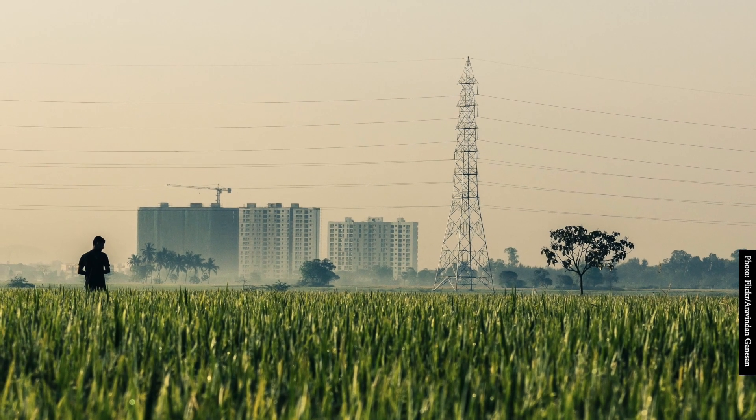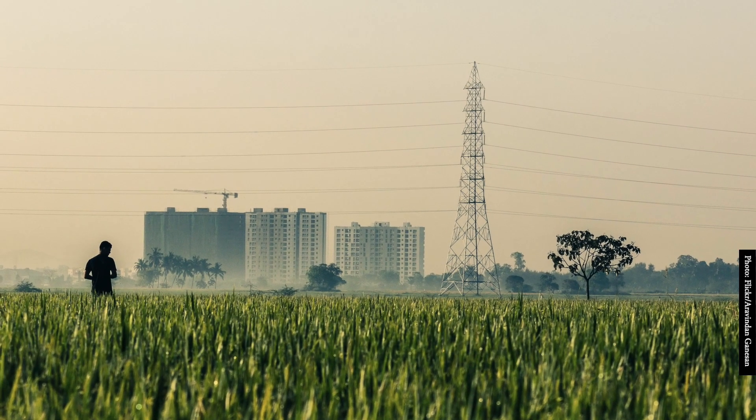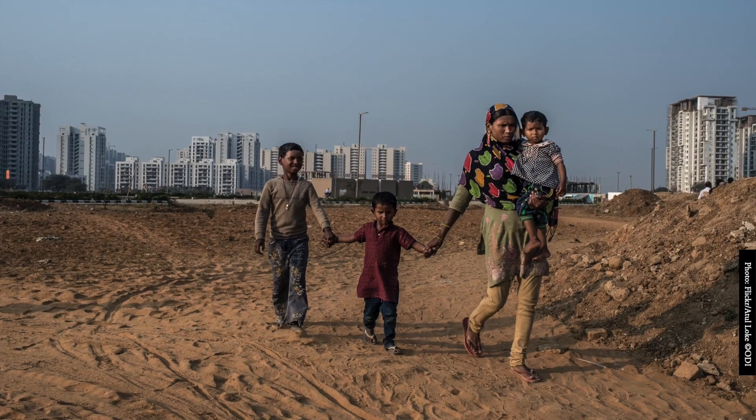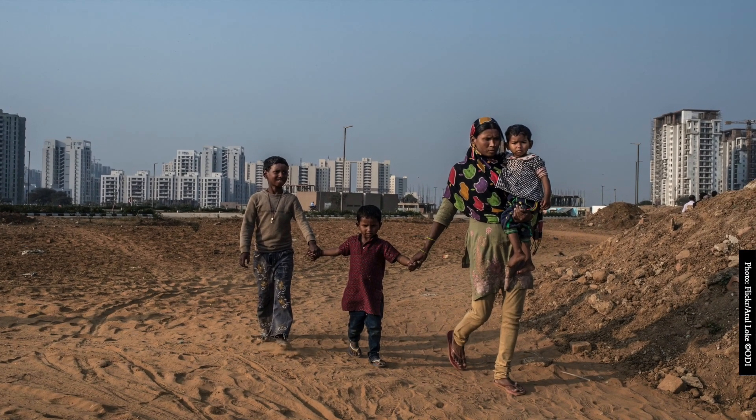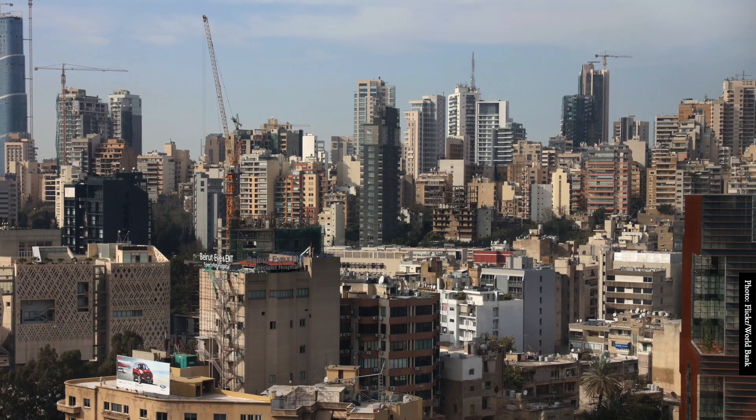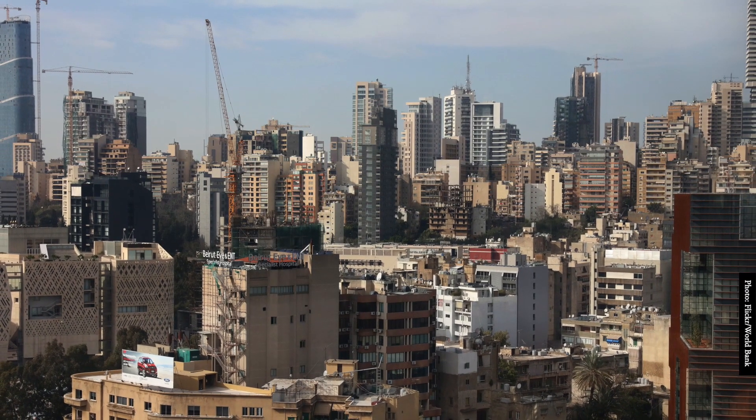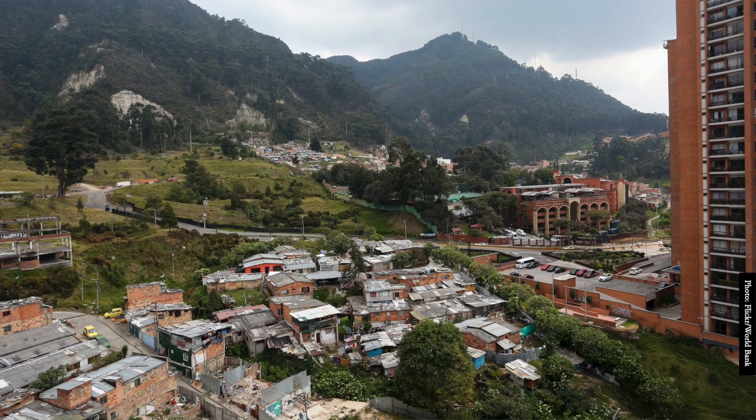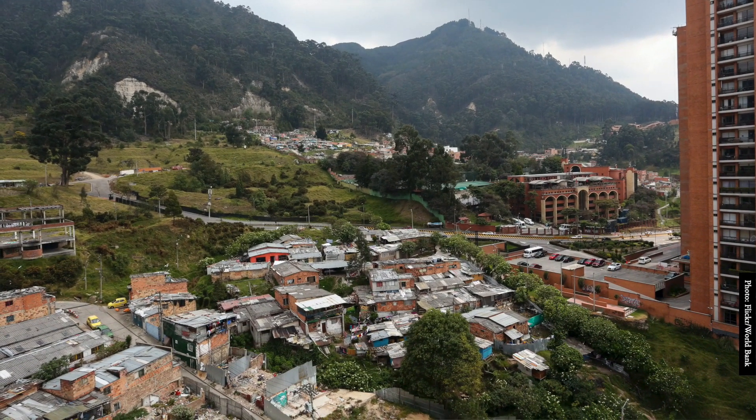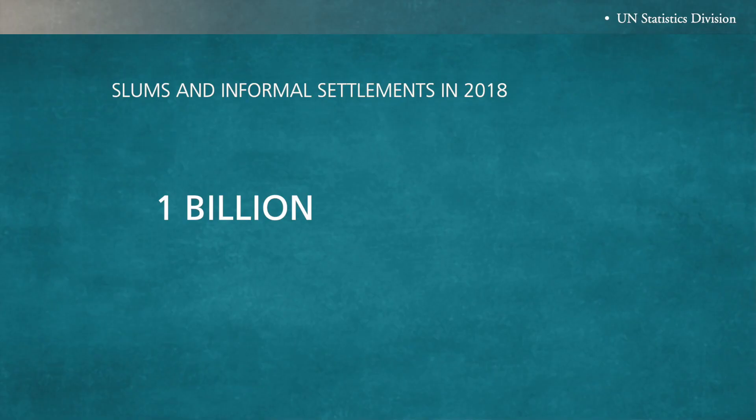One of the most significant factors in urban development globally is the rapid urbanization, resulting from rural to urban migration and general population increase. The growth has outpaced the construction of adequate and affordable housing in many countries around the world. The UN Statistics Division estimates that in 2018 over 1 billion people were living in slums or informal settlements.